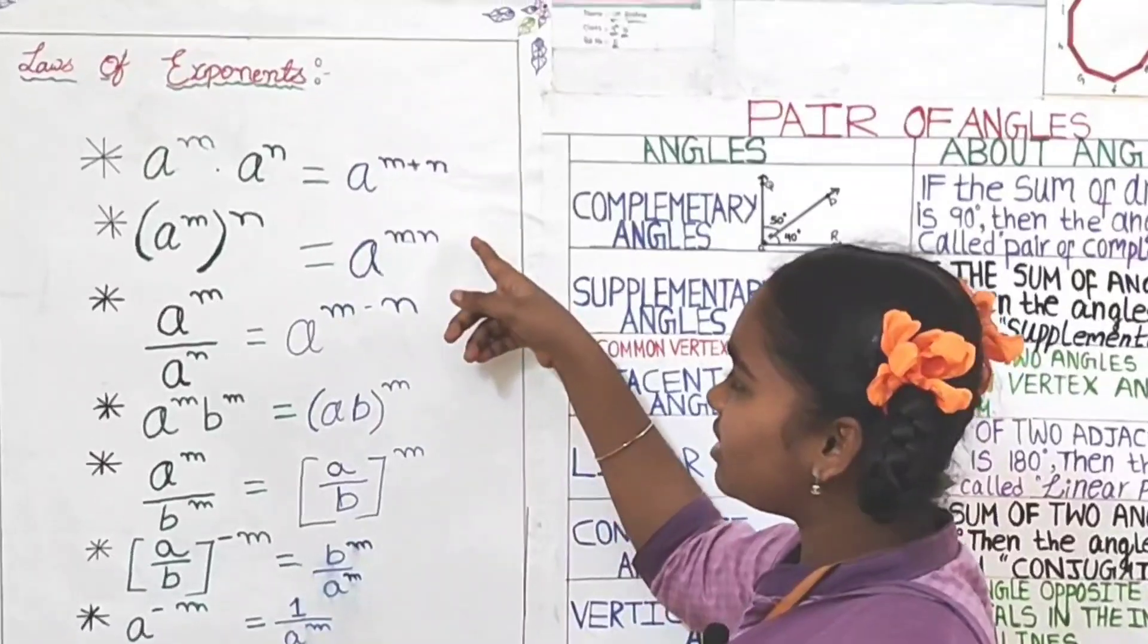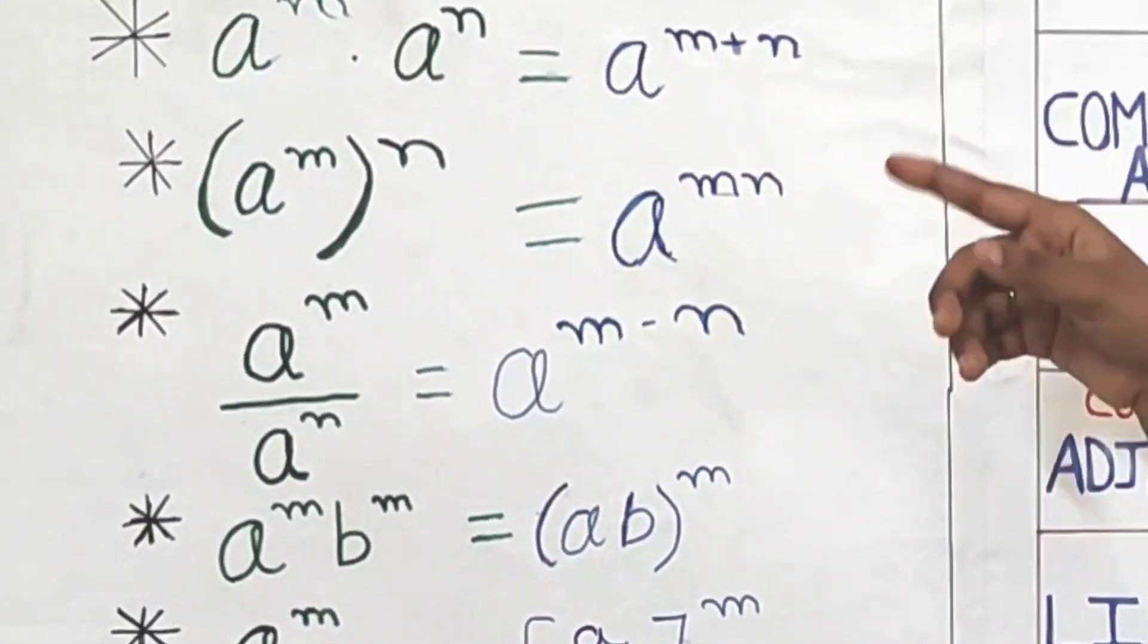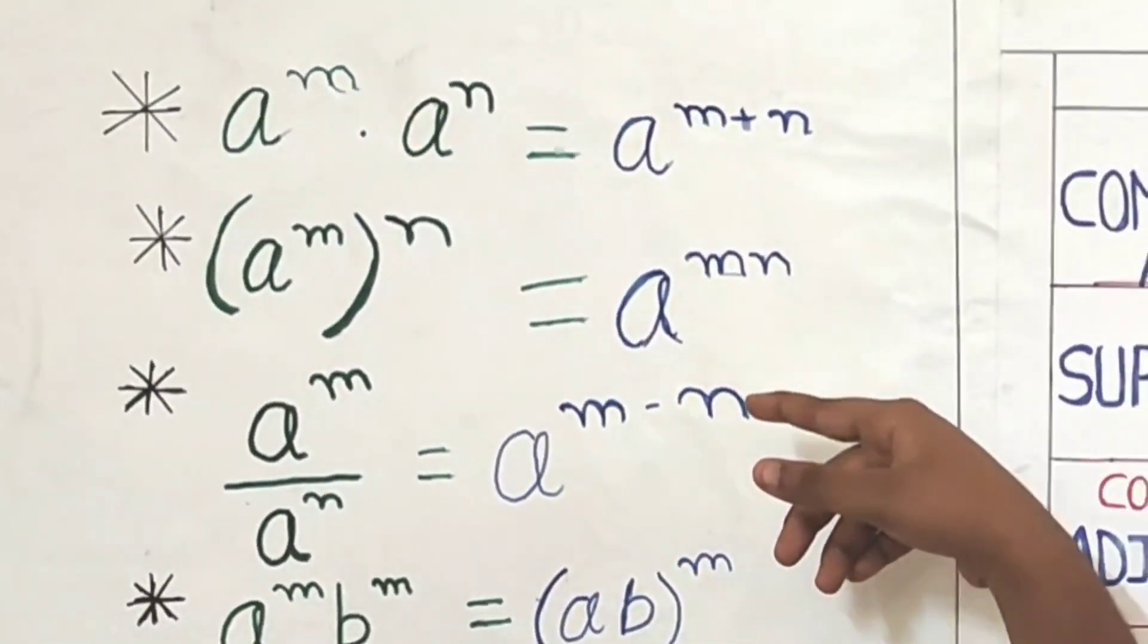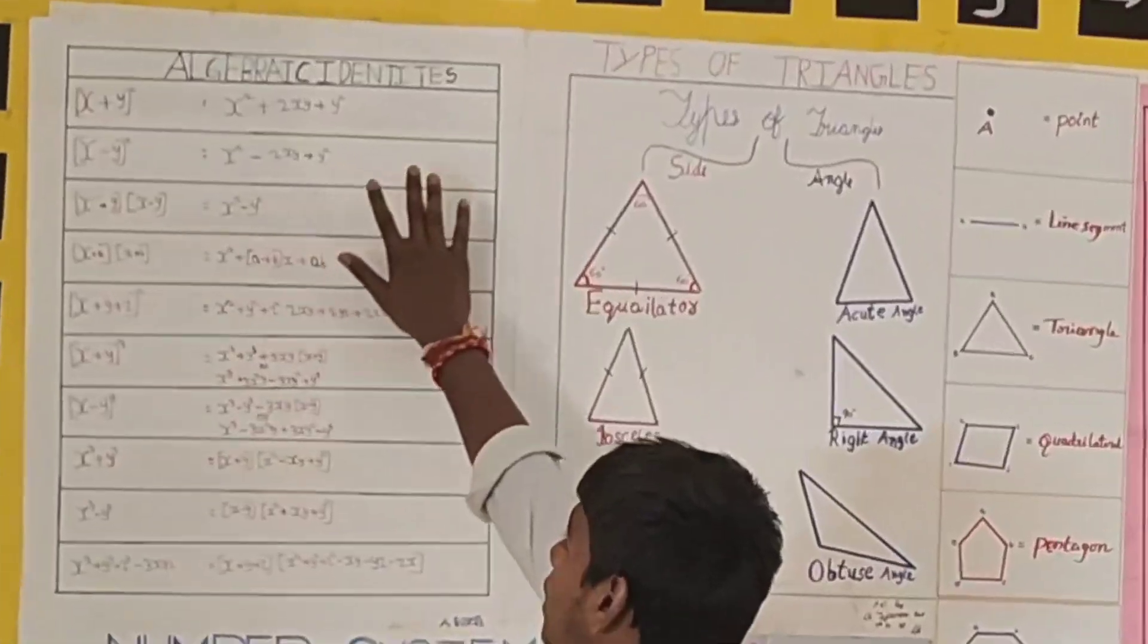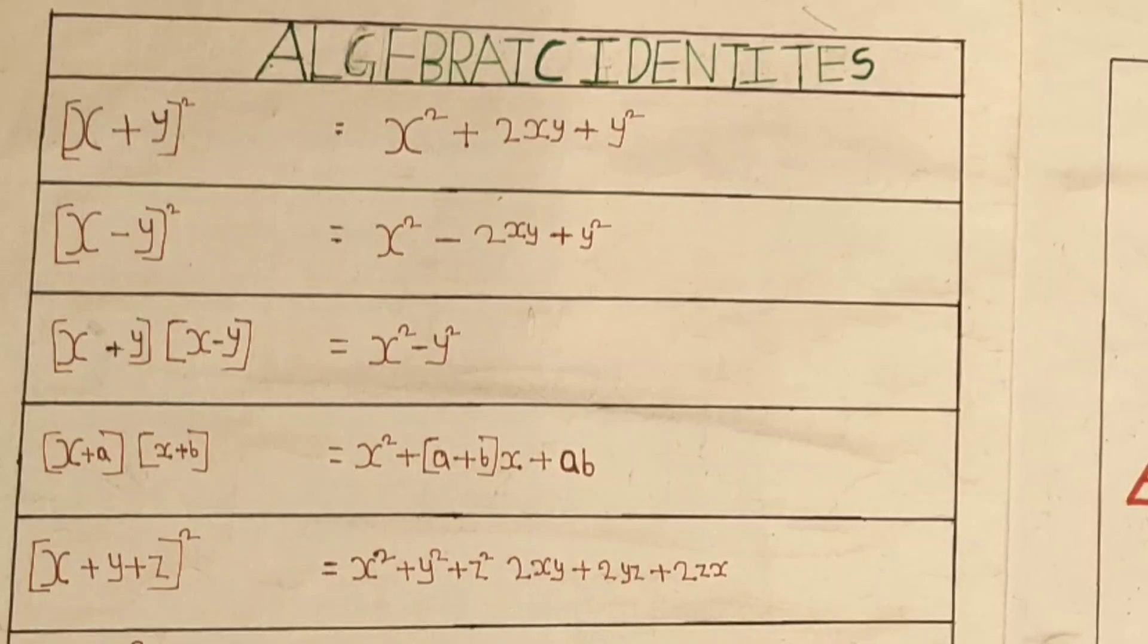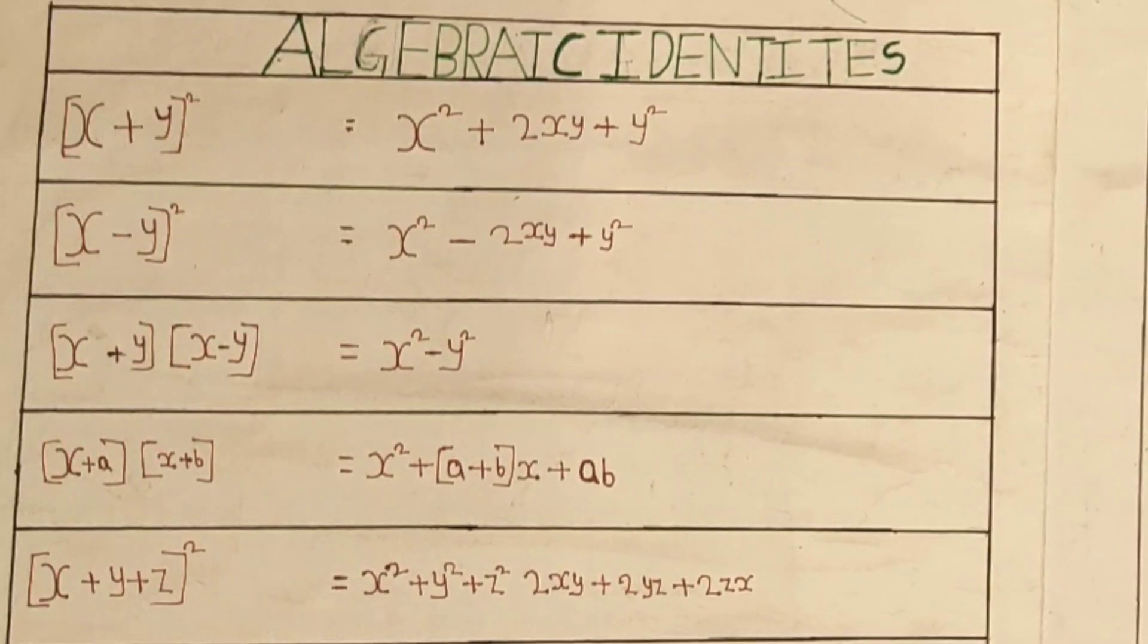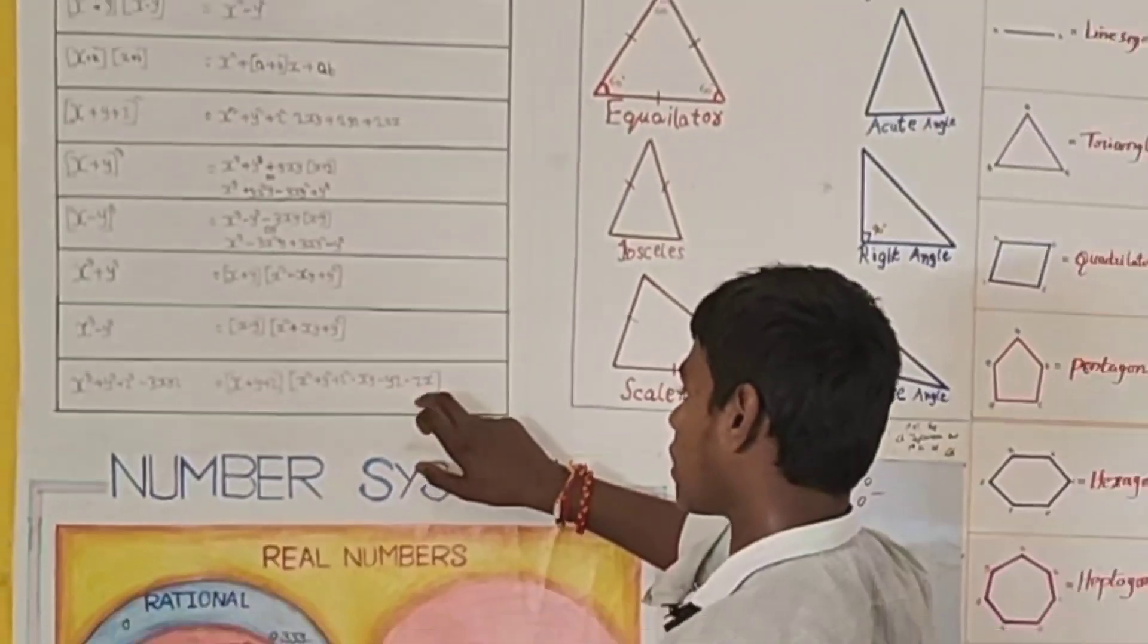Laws of exponents. A power M into A power N is equal to A power M plus N. A power M whole power N is equal to A power M into N. These are algebraic identities. X plus Y whole square is equal to X square plus 2XY plus Y square. X minus Y whole square is equal to X square minus 2XY plus Y square. X plus Y into X minus Y is equal to X square minus Y square.